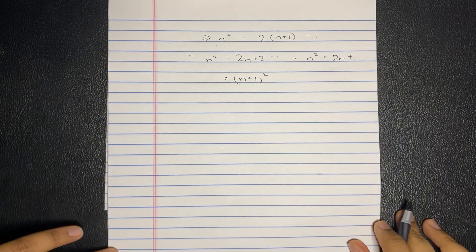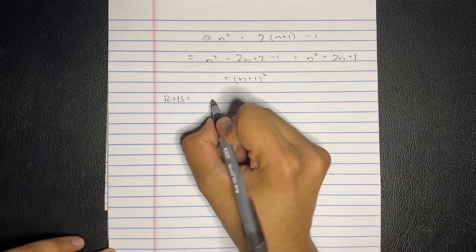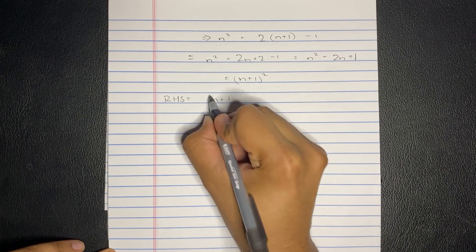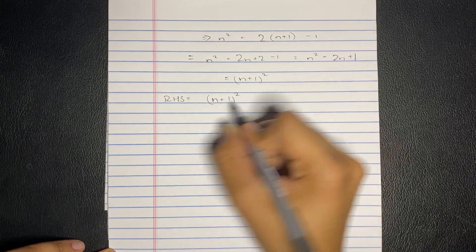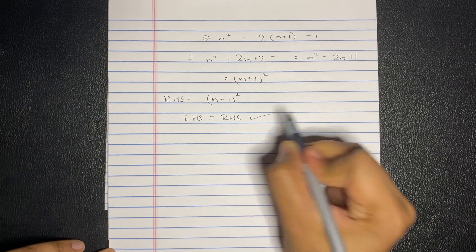That's your left-hand side. And your right-hand side is n is supposed to replace that n plus 1 squared. So actually, LHS equals RHS. And we got that.